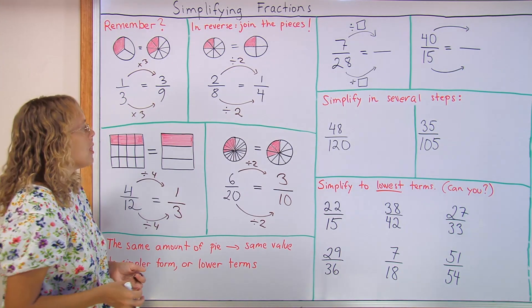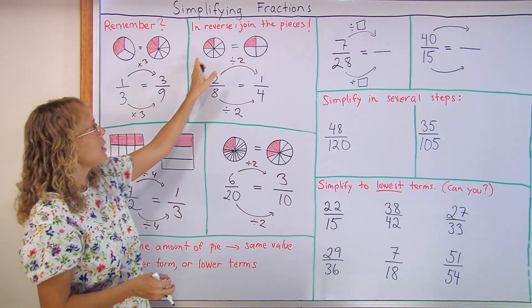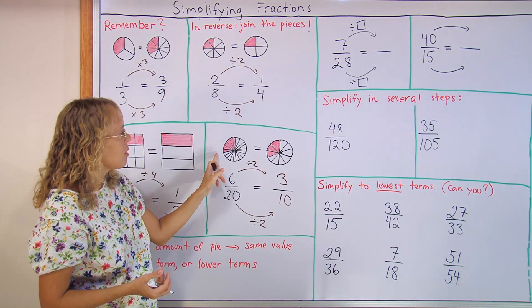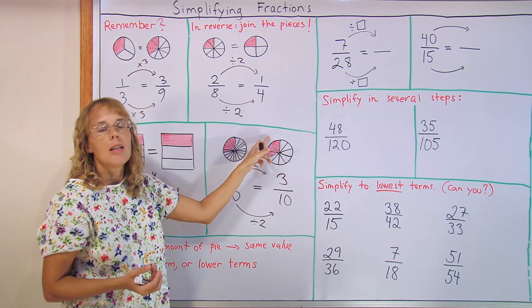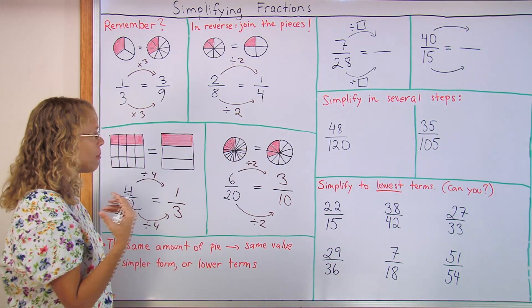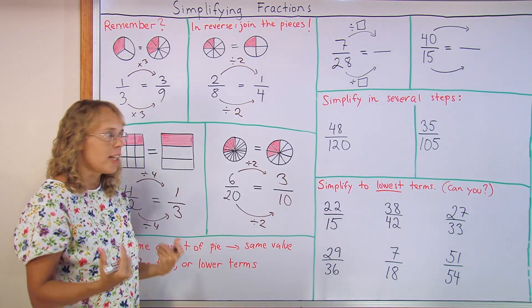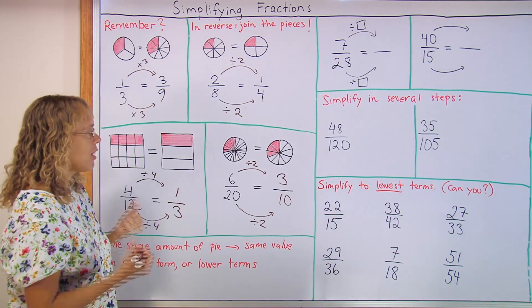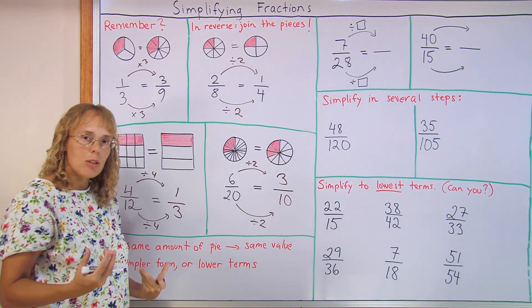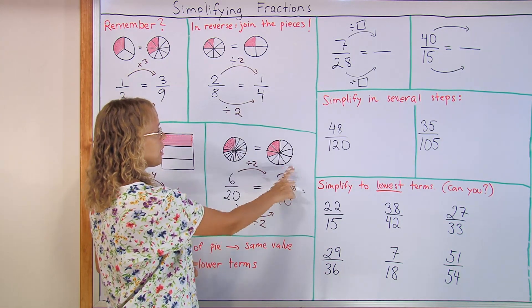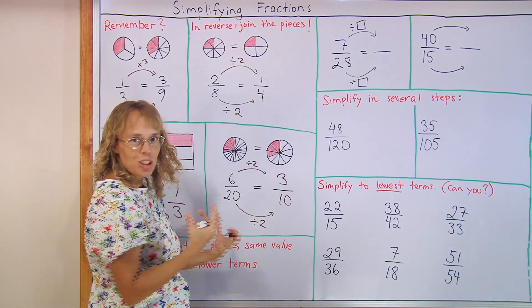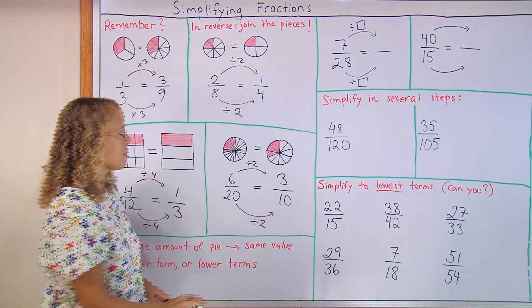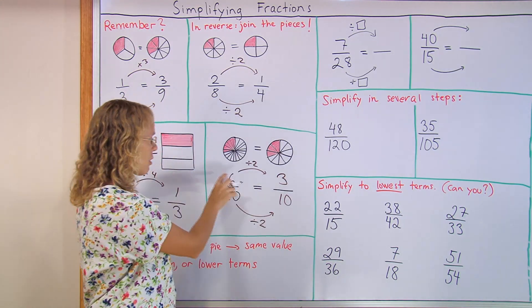Now, we need to also note that there is the same amount of pie to eat in each case. There are less pieces, but the pieces are bigger. Here we have six pieces, here three pieces, less pieces but bigger pieces, the amount is the same. The value of the fraction does not change in this process. The fraction itself does not get bigger, its value is the same, it just becomes simpler looking. When your numbers here are smaller, it looks simpler. That's why it's called simplifying. And we can also call it that it is in lower terms, because the numbers three and ten are smaller than the numbers used here.